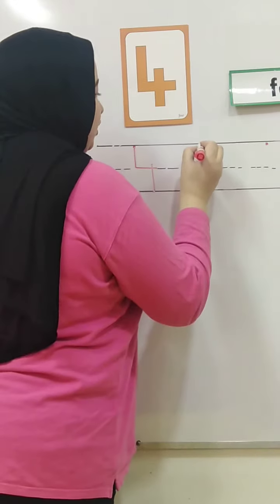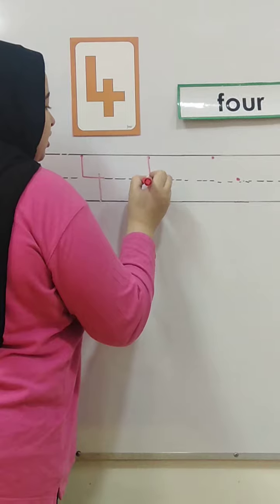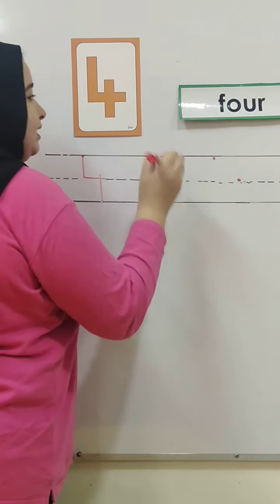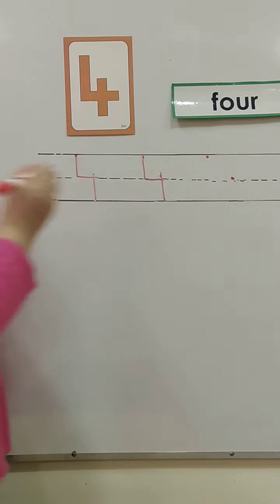One more time. Start from the dot, straight line down, dash on the line, take off your pencil, and another straight line.